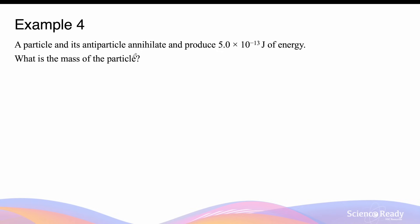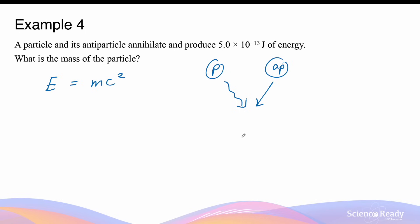This is an example of Einstein's mass-energy equivalence principle, which is part of his theory of special relativity. When a particle P and antiparticle AP annihilate, the combined mass is completely transformed into energy. A key characteristic of a particle and antiparticle pair is that they typically have the same mass and opposite charges.